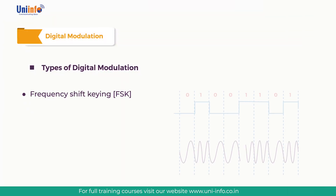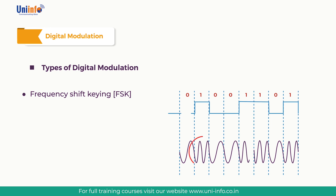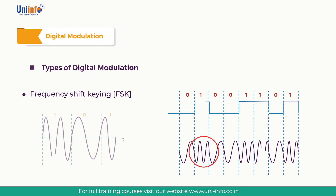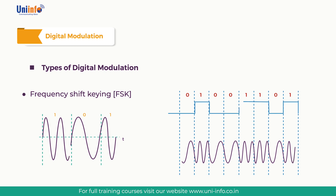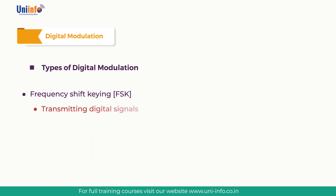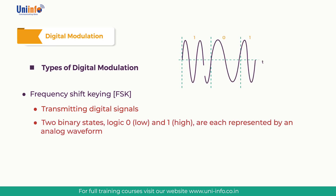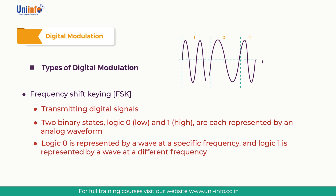Frequency shift keying (FSK) is a frequency modulation scheme in which digital information is transmitted through discrete frequency changes of a carrier wave. It is a method of transmitting digital signals where the two binary states — logic zero (low) and logic one (high) — are each represented by an analog waveform. Logic zero is represented by a wave at one specific frequency, and logic one is represented by a wave at a different frequency.